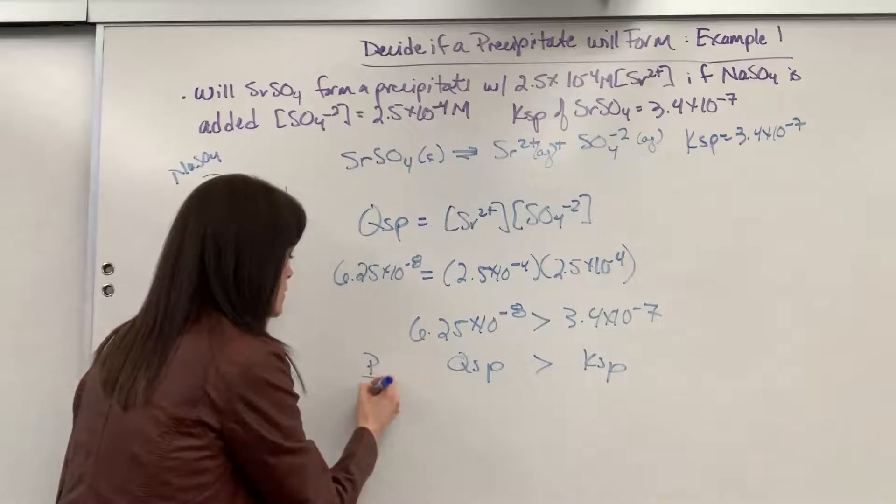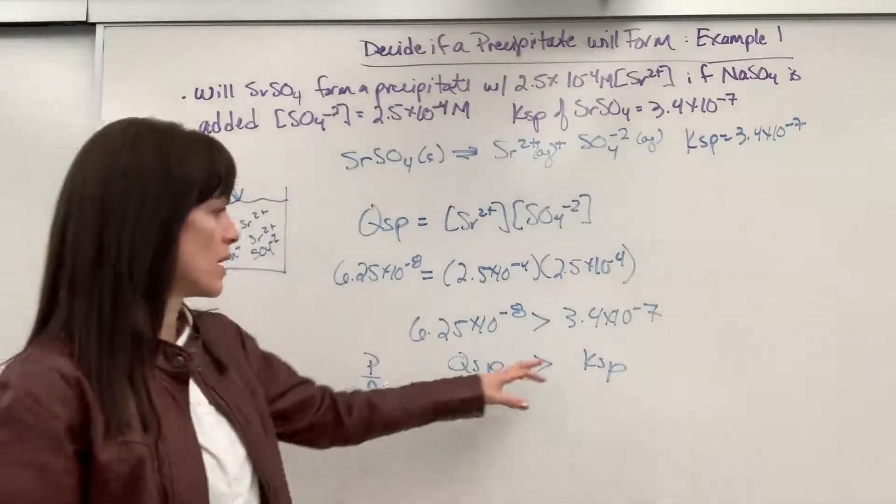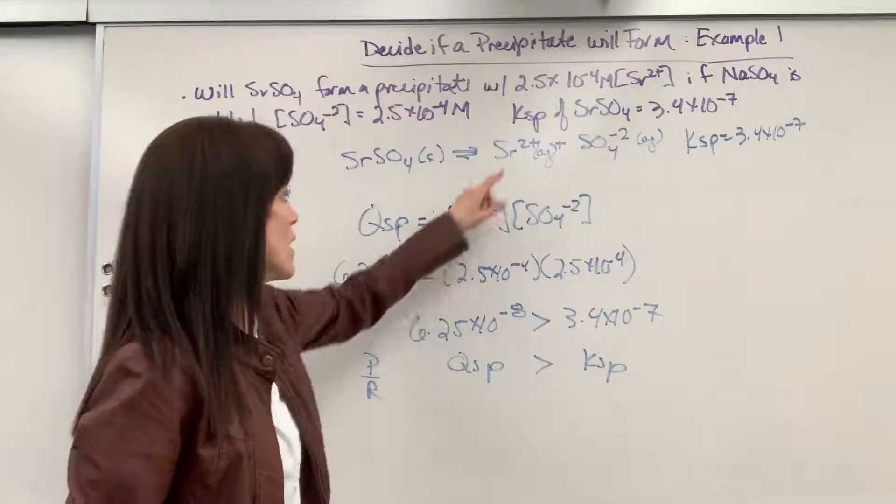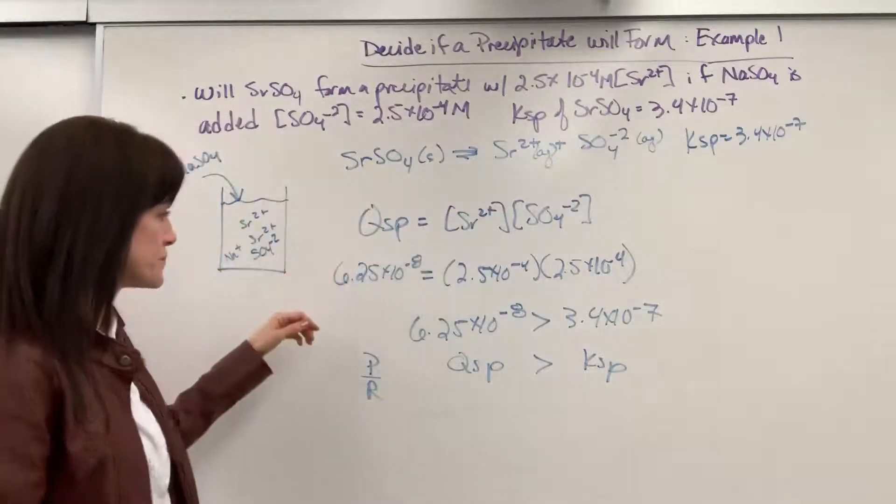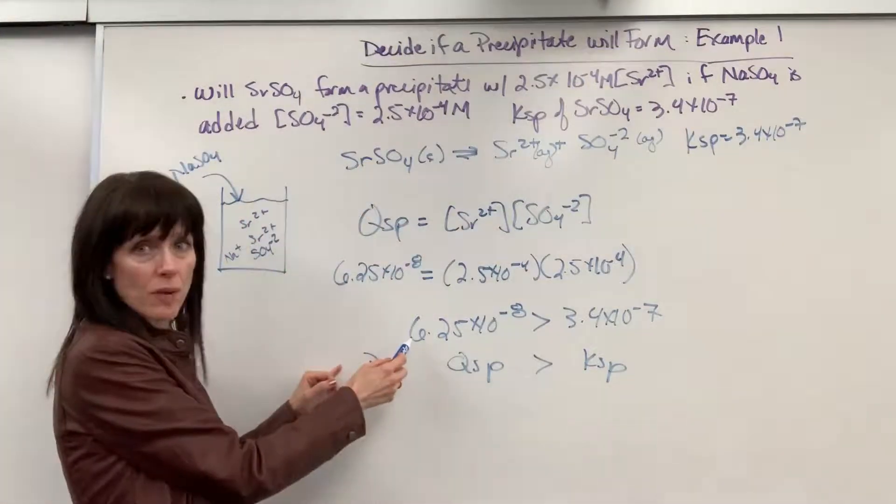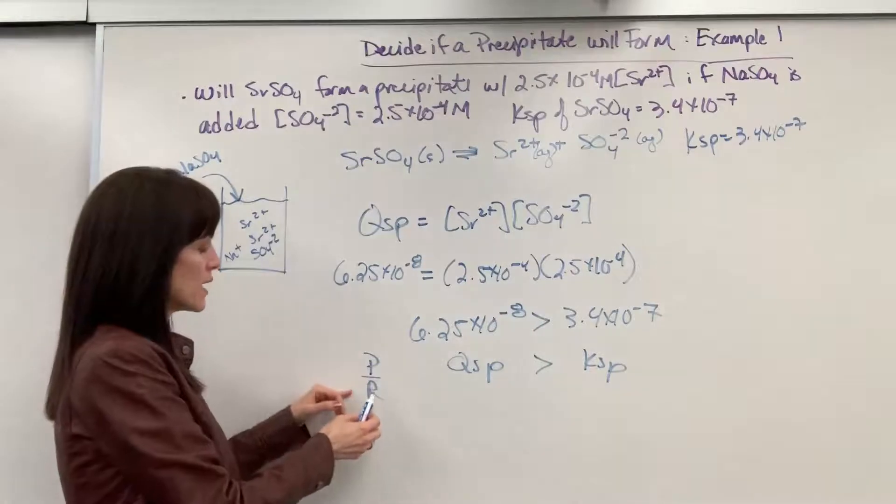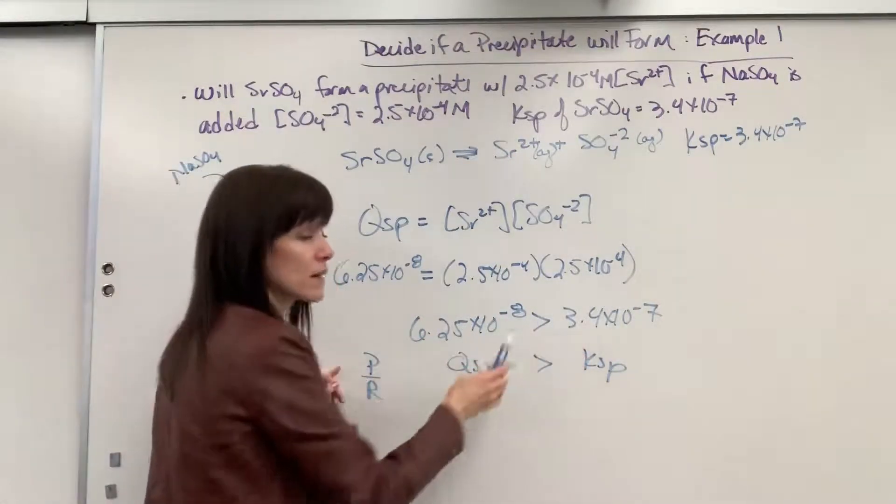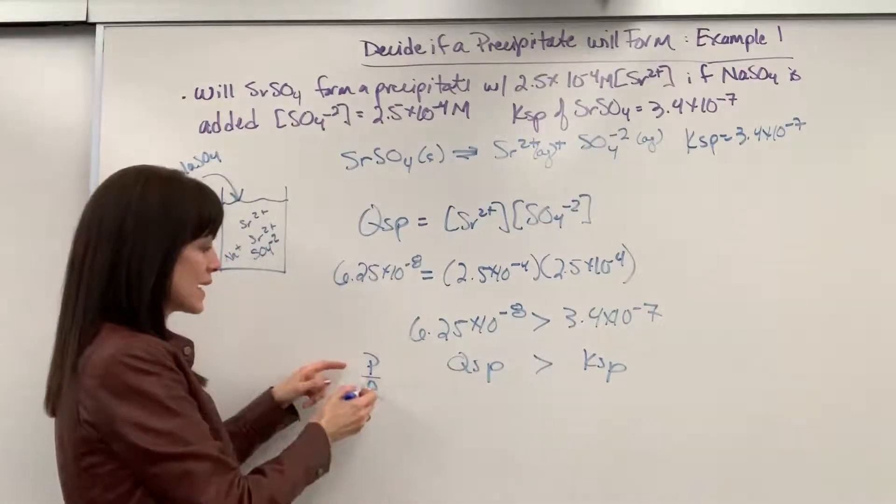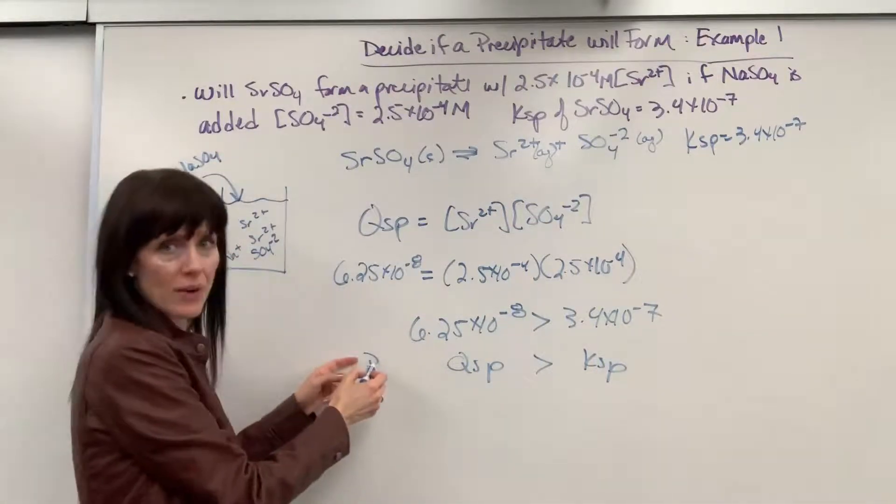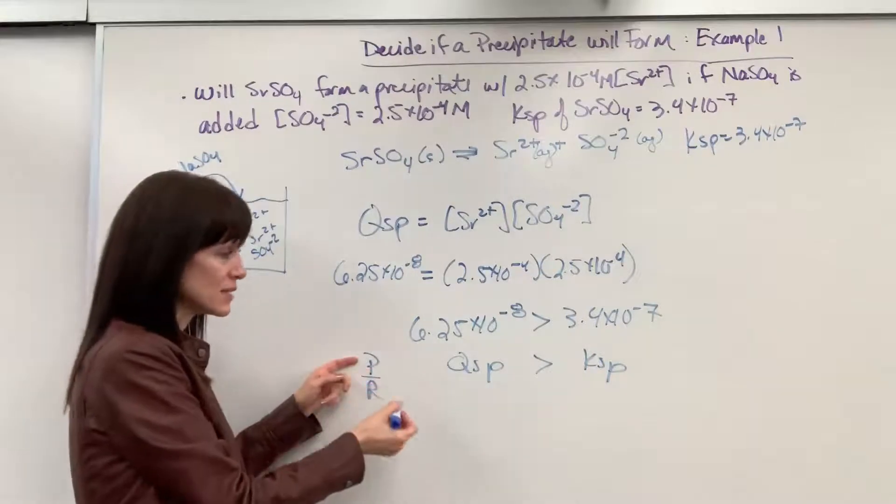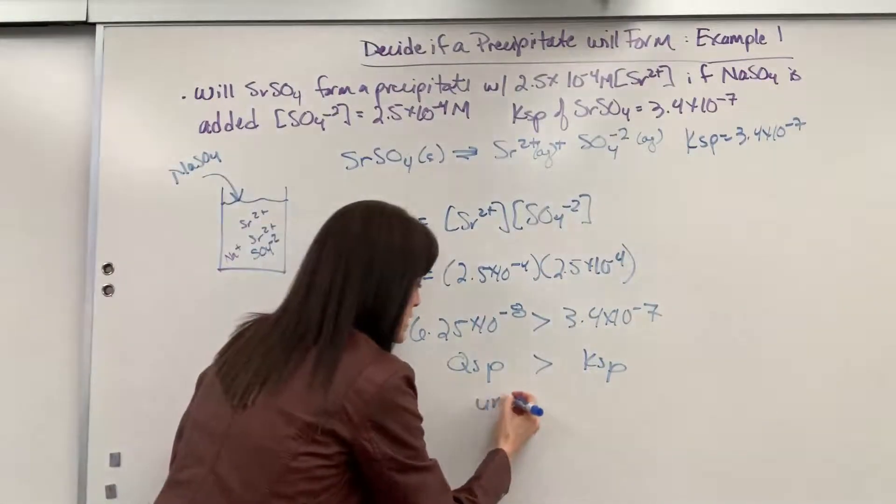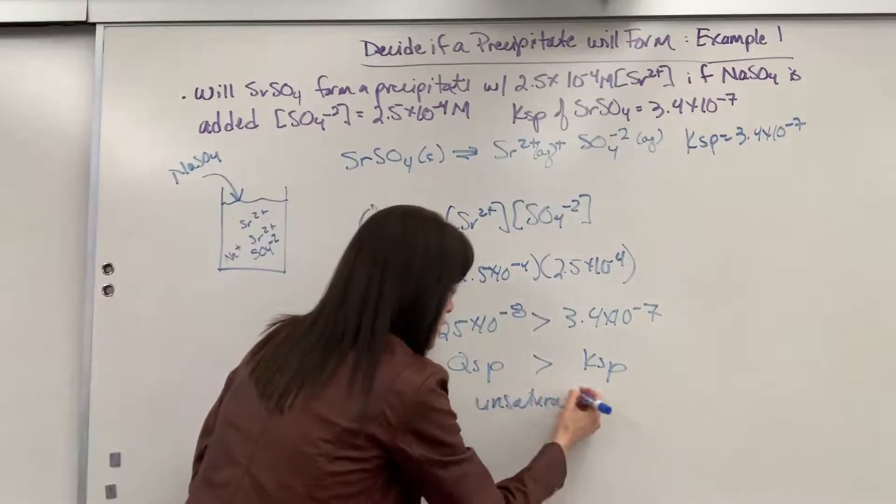Remember, products over reactants. That's what our equilibrium expression is, right? Products over reactants. So, if Qsp is smaller, that means that if this is smaller, it's got to become a bigger number. To get a bigger number, if I'm looking at this quotient, it means we need more products, which means this is unsaturated. I don't have enough products.